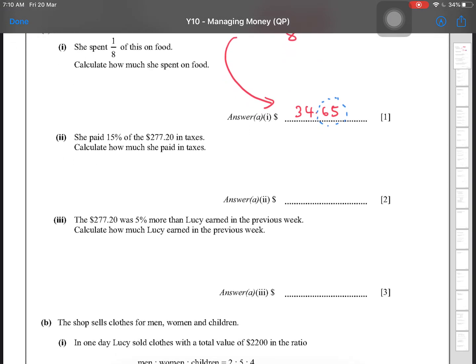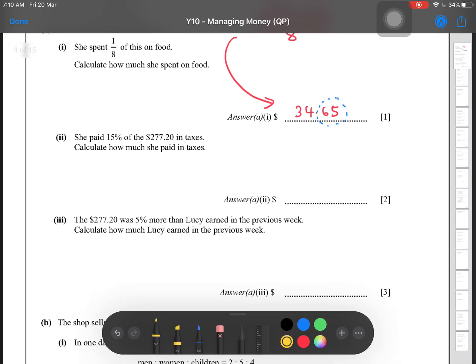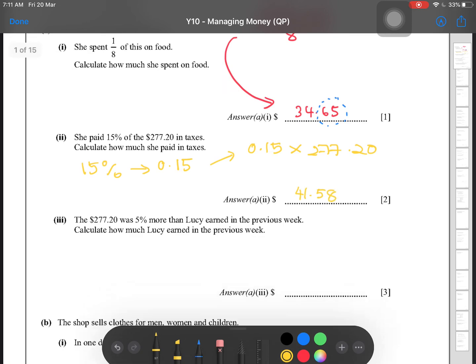Question 2. She paid 15% of the 277.20 in taxes. Calculate how much she paid in taxes. When it comes to finding percentages, you must first change it to the multiplier. So 15% can also be written as 0.15. And because they want to know how much she paid in taxes, the working for this is 0.15 multiplied by 277.20, and the answer for this is 41.58.